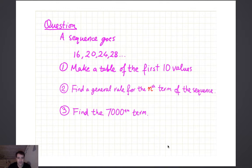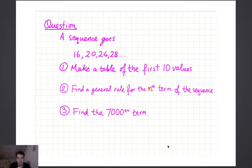Here's a question: a sequence goes 16, 20, 24, 28. I want you to make a table of the first 10 values, find a general rule for the nth term, and having done that, find the 7,000th term without having to work out the previous 6,999. Pause the video and have a go at that.